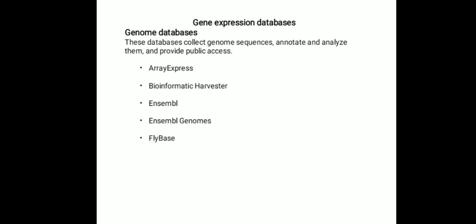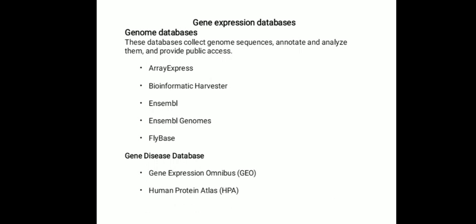FlyBase covers the genome of the model organism Drosophila melanogaster. The Gene Expression Omnibus or GEO includes a public functional genomics data repository from the US National Cancer Institute, which supports array and sequence-based data; tools for querying and downloading gene expression profiles are provided. The Human Protein Atlas or HPA is a public database with expression profiles of human protein-coding genes at both the mRNA and protein level in tissues, cells, subcellular compartments and cancer tumors.